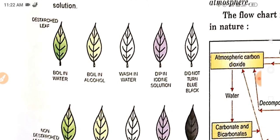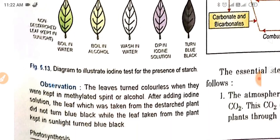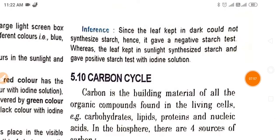If it did not turn to blue-black, and what will happen if it turns to blue-black color? You observe that the leaves turned colorless when they were kept in methylated spirit or alcohol. After adding iodine solution, the leaf which was taken from the destarched plant did not turn blue-black. Why? The leaf taken from the plant kept in sunlight turned blue-black because it proved that starch is present in it. Since the leaf kept in dark could not synthesize starch, hence it gave a negative starch test, whereas the leaf kept in sunlight synthesized starch and gave positive starch test with iodine solution.